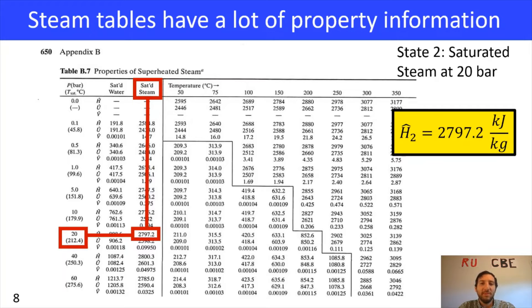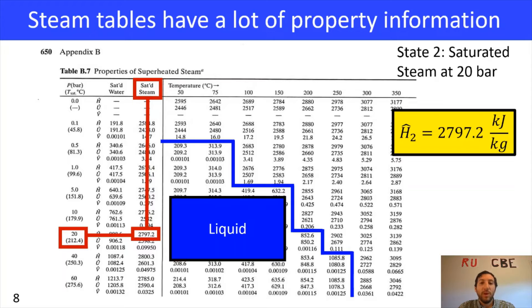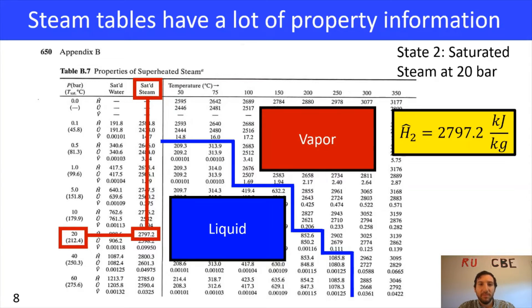If you look closely at the steam table, you notice there's a set of stairs. That staircase tells you there are two different phases: when you're underneath the stairs you have a liquid state, and when you're above the stairs you have a vapor state. That makes sense because as you increase pressure you're more likely to have liquid rather than vapor, and as you increase temperature you're more likely to have vapor than liquid. A little cheat: liquids have very low specific volumes and vapors have very high specific volumes. Water has a density of 1000 kg/m³, so its specific volume is 0.001 — that helps you identify which section is liquid and which is vapor.